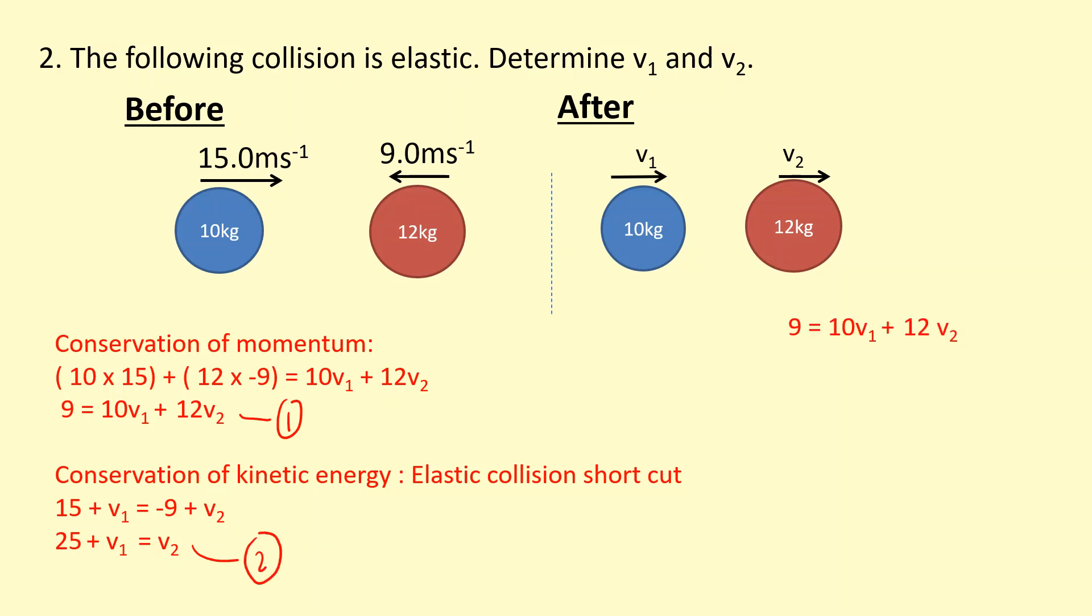So I'm going to write equation one out first. Okay, then I'm going to—into equation one, I'm going to get rid of v2 because I know v2 is equal to 25 plus v1. So if I put that in instead of v2, then I'm going to expand that bracket. Okay, I'm going to rearrange to get all the numbers on one side and all the v1s on one side and then solve. Now I have v1.